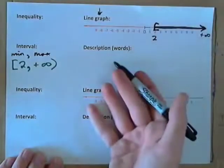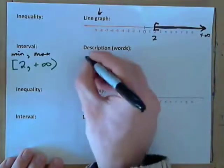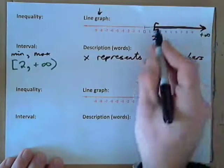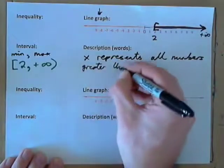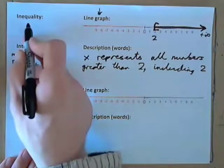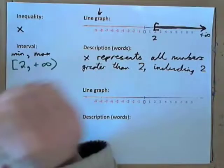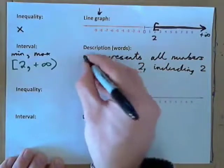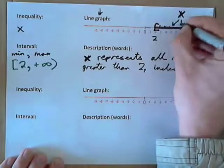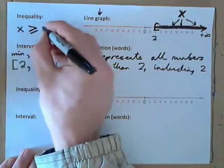Probably easiest now to go and do the description. x represents all numbers between 2 and positive infinity, including 2. Or you could say: x represents all numbers greater than 2, including 2. As an inequality, that's all numbers greater than or equal to 2. x is a variable we use to represent all the numbers in here. So, x is greater than or equal to 2.